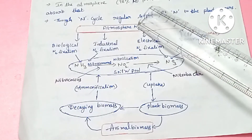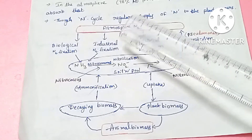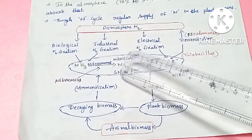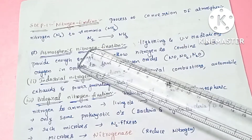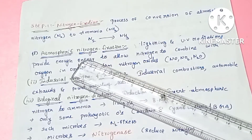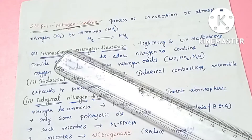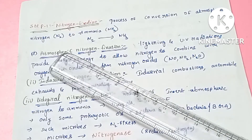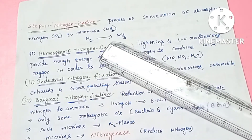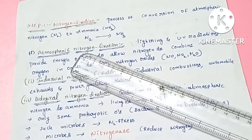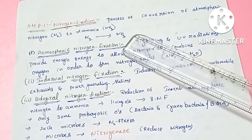Denitrification removes nitrogen from the soil to the atmosphere. From the atmosphere, nitrogen re-enters the cycle through biological nitrogen fixation, industrial nitrogen fixation, and electrical nitrogen fixation. The next concept is nitrogen fixation. Nitrogen fixation is the process of conversion of atmospheric nitrogen — N2 form — into usable nitrogen compounds.